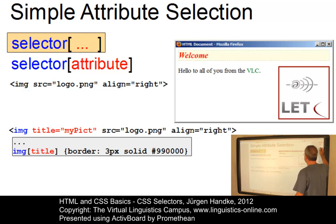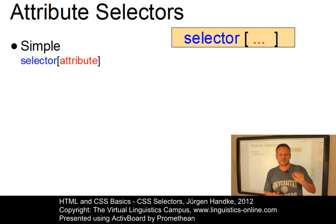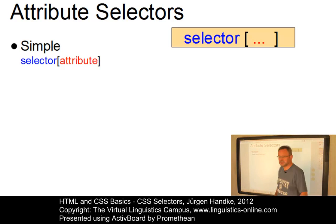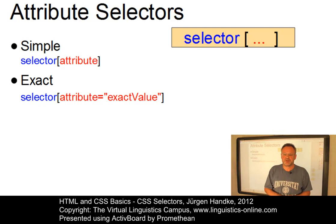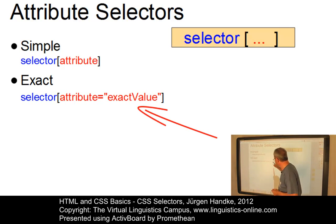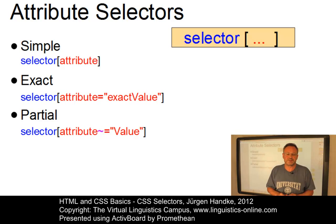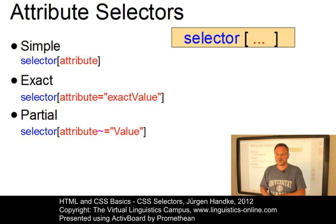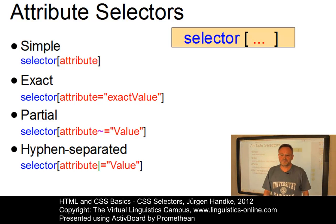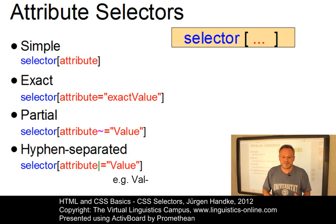There are several ways of attribute selection. Since browser support is a bit disappointing, we will just list them. The simple attribute selection has just been demonstrated. The exact method references only elements whose attribute not only matches the style property but also its value — the strings must be identical. The partial method references elements where the attribute value contains the property value as a substring. The hyphen-separated form is similar to the partial form, but the property value involves a hyphen in the attribute value.